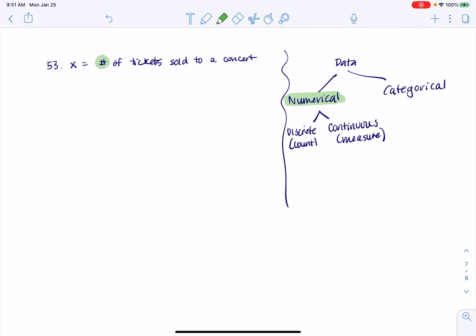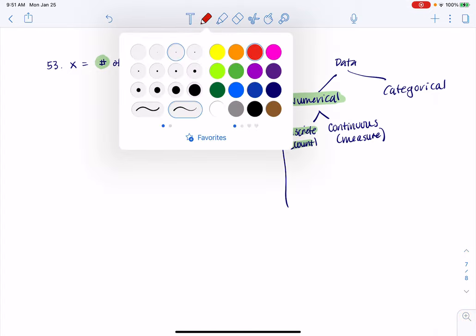And then in terms of thinking about the number of tickets sold to a concert, do we count that or do we measure that? And I would count the number of tickets that I sold. So that makes this type of data numerical discrete.